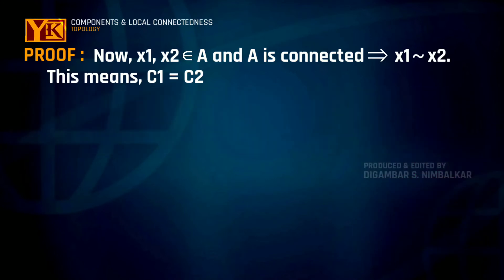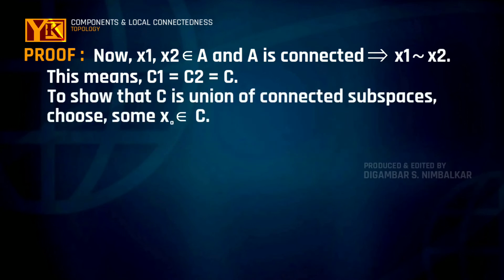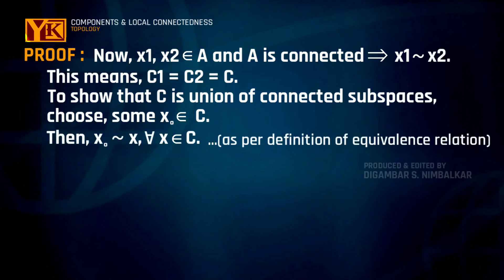Now, let us name this c1 or c2 to be equal to some c. Now, we are only remaining to show that this component c is connected. So, for this choose some x0 in c then for each point x in c x0 will be equivalent to x by definition of equivalence relation.